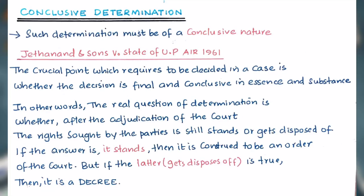The next element is conclusive determination — such determination must be of a conclusive nature. In the case of Jaitanand and Sons v. State of UP, 1961, it was held that the crucial point to be decided is whether the decision is final and conclusive in essence and substance. In other words, the real question is whether after the adjudication of the court, the rights sought by the parties still stand or get disposed of. If the answer is that they still stand, then it is considered to be an order of the court. But if the latter — i.e., they get disposed of — is true, then it is a decree.